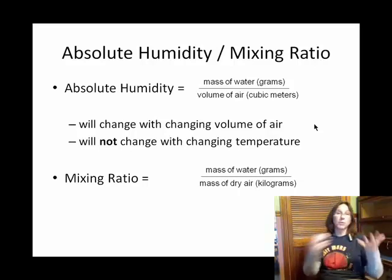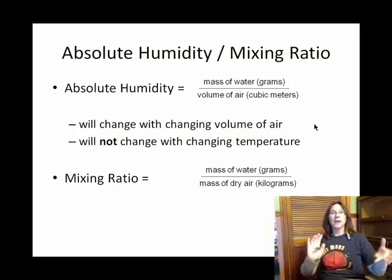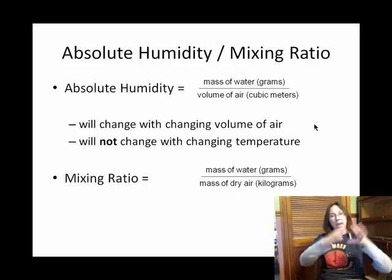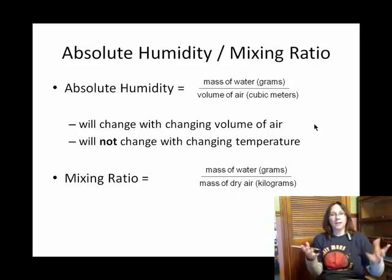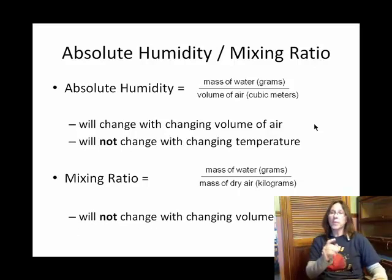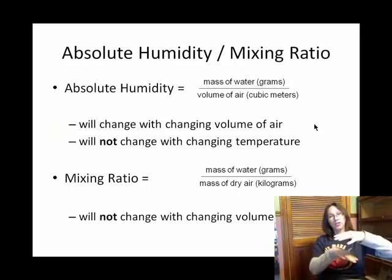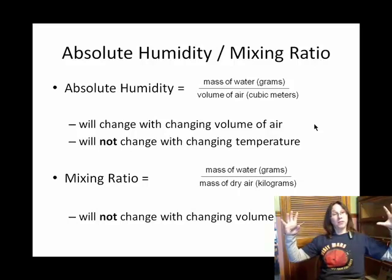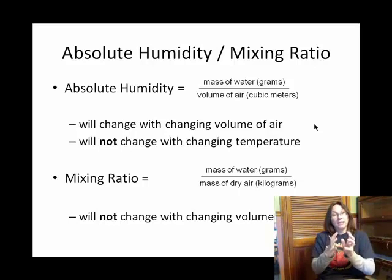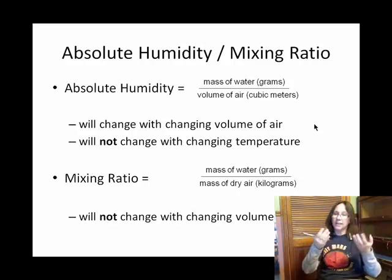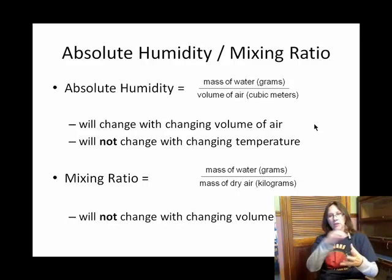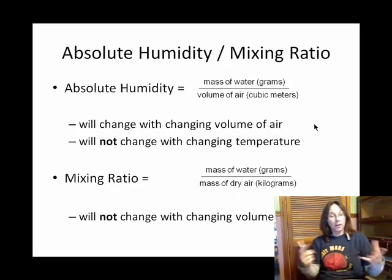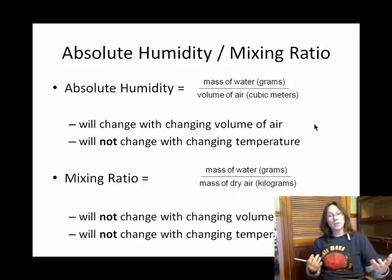Most of the air we're walking in is nitrogen gas followed by oxygen, so when we talk about the mass of the dry air, you can picture nitrogen and oxygen. The key thing about mixing ratio is since the denominator is just the mass of the dry air, if that parcel of air swells or contracts — if its volume increases or decreases — it's going to have the same mixing ratio. So mixing ratio is a way to express humidity that is independent of volume.